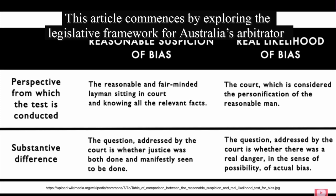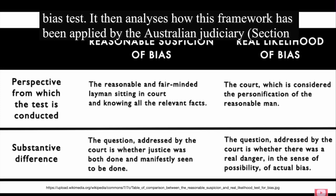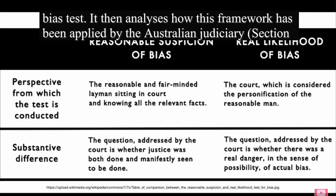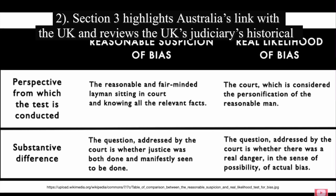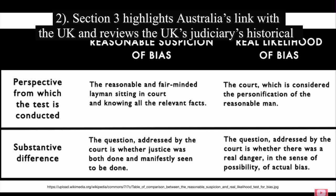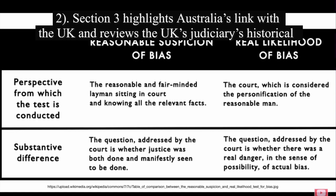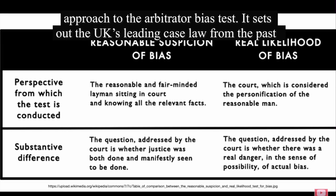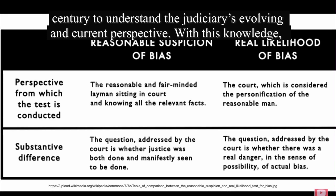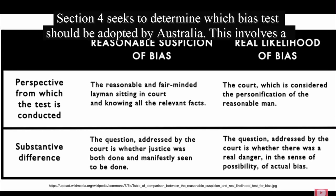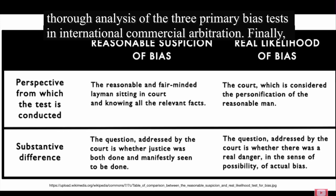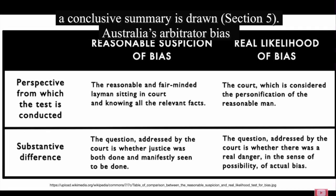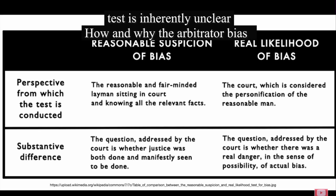This article commences by exploring the legislative framework for Australia's arbitrator bias test. It then analyses how this framework has been applied by the Australian Judiciary (Section 2). Section 3 highlights Australia's link with the UK and reviews the UK judiciary's historical approach to the arbitrator bias test, setting out the UK's leading case law from the past century to understand the judiciary's evolving and current perspective. With this knowledge, Section 4 seeks to determine which bias test should be adopted by Australia, involving a thorough analysis of the three primary bias tests in international commercial arbitration. Finally, a conclusive summary is drawn in Section 5.